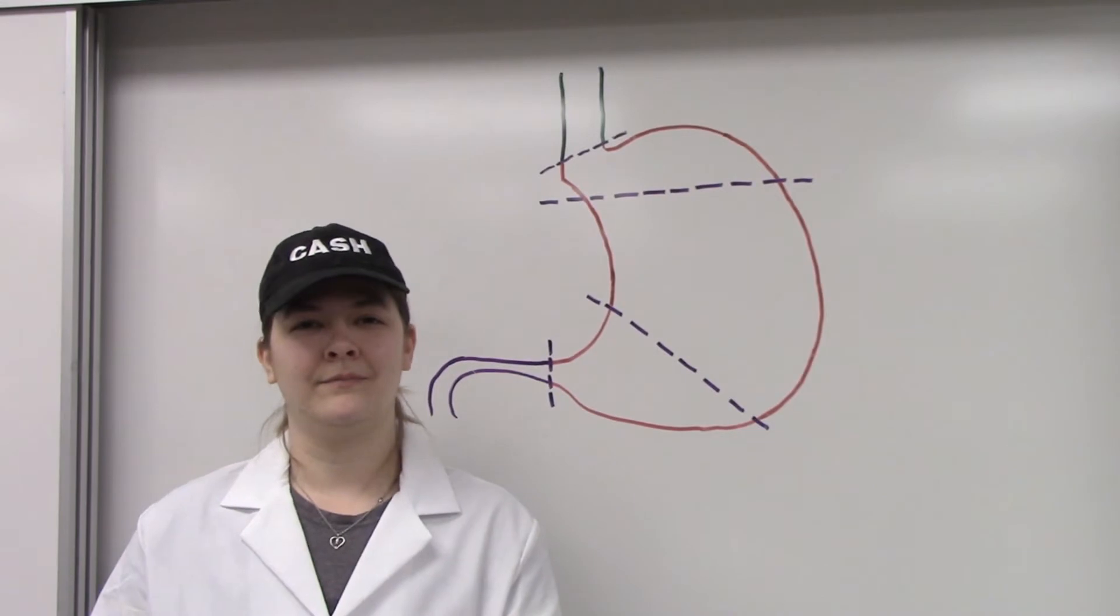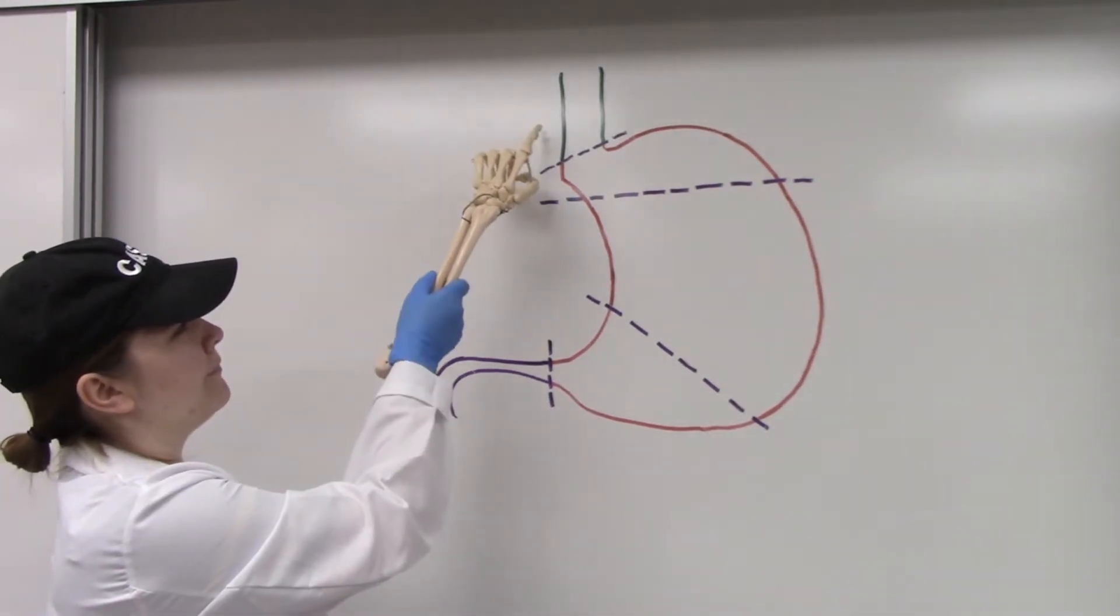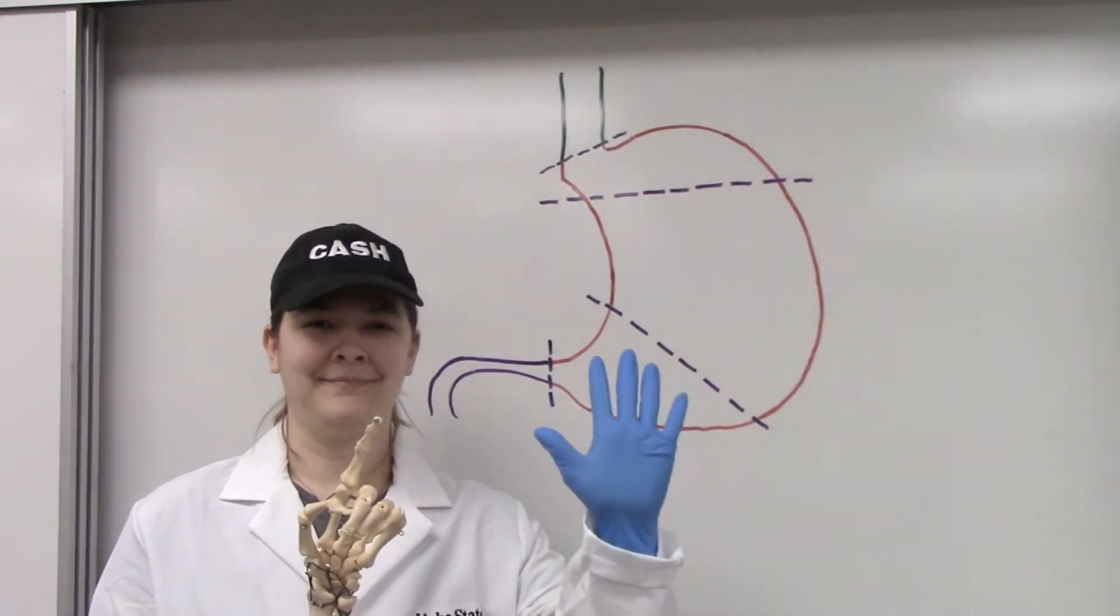Food travels to the stomach via the esophagus, this structure here. There are six things associated with the stomach you are responsible for knowing.